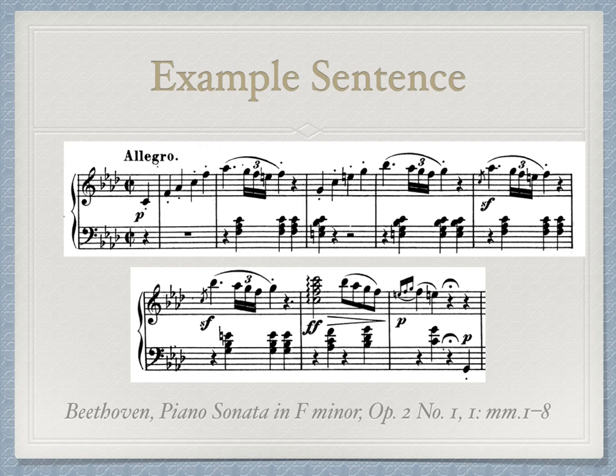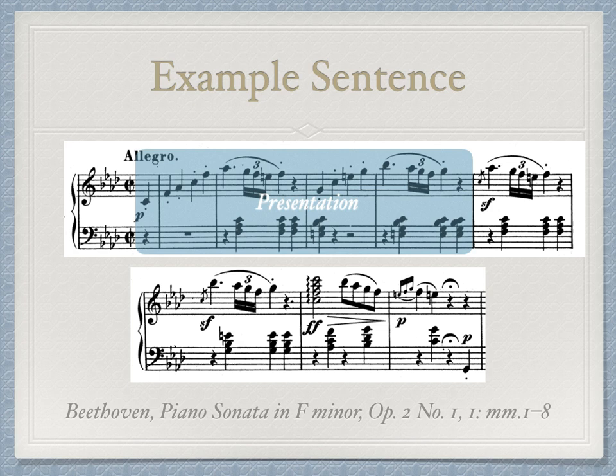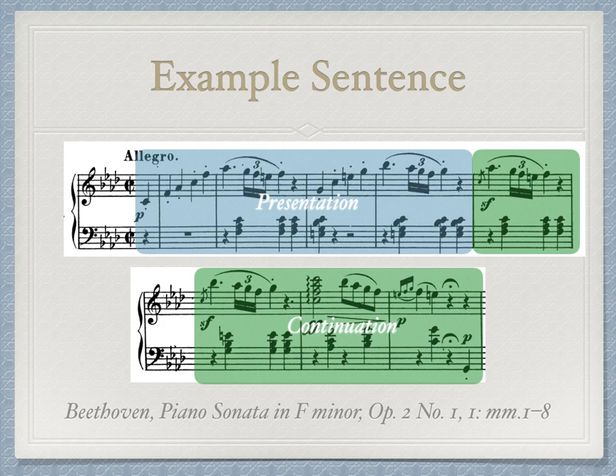Let's look at an example sentence from Beethoven's Piano Sonata in F minor. In blue, we can see the first half of the sentence, which is the presentation. The second half, in green, is the continuation. This example bisects the eight measures into groups of four plus four, as is often the case for sentences. But let's look at the component parts to really understand the makeup of this theme.